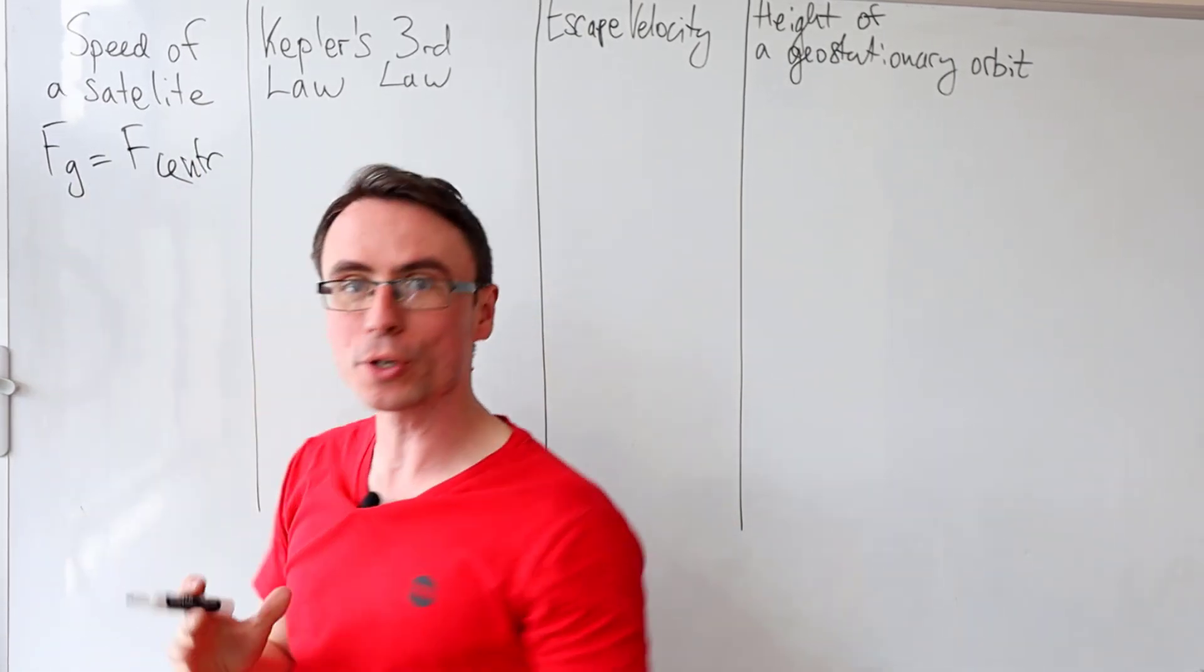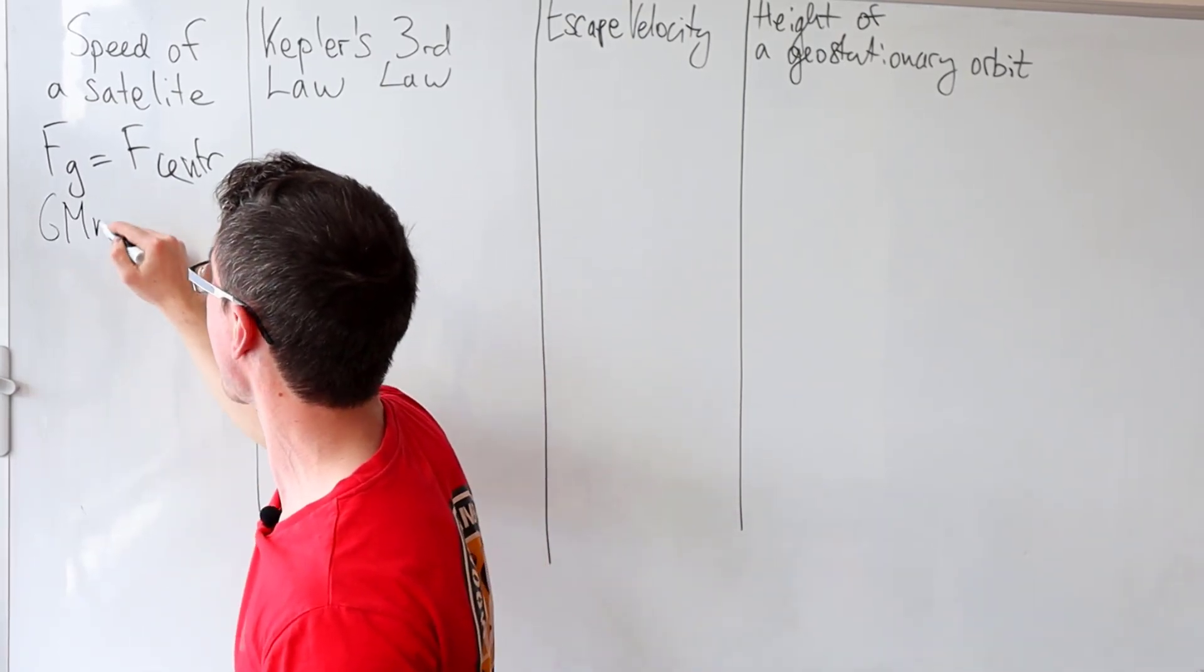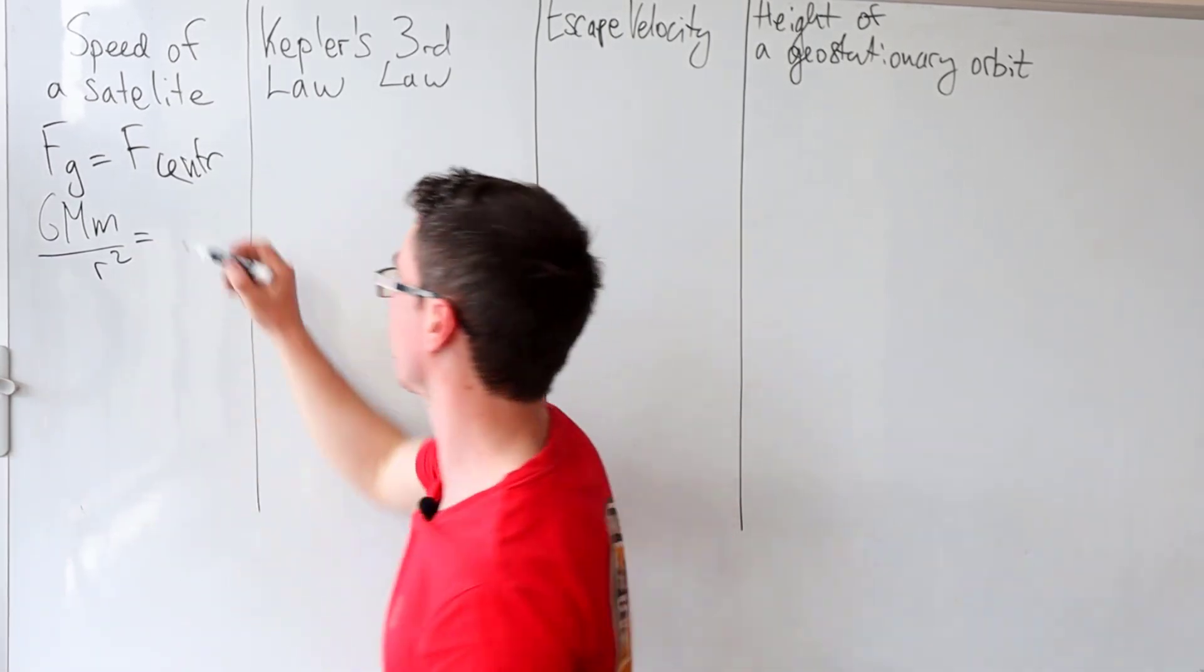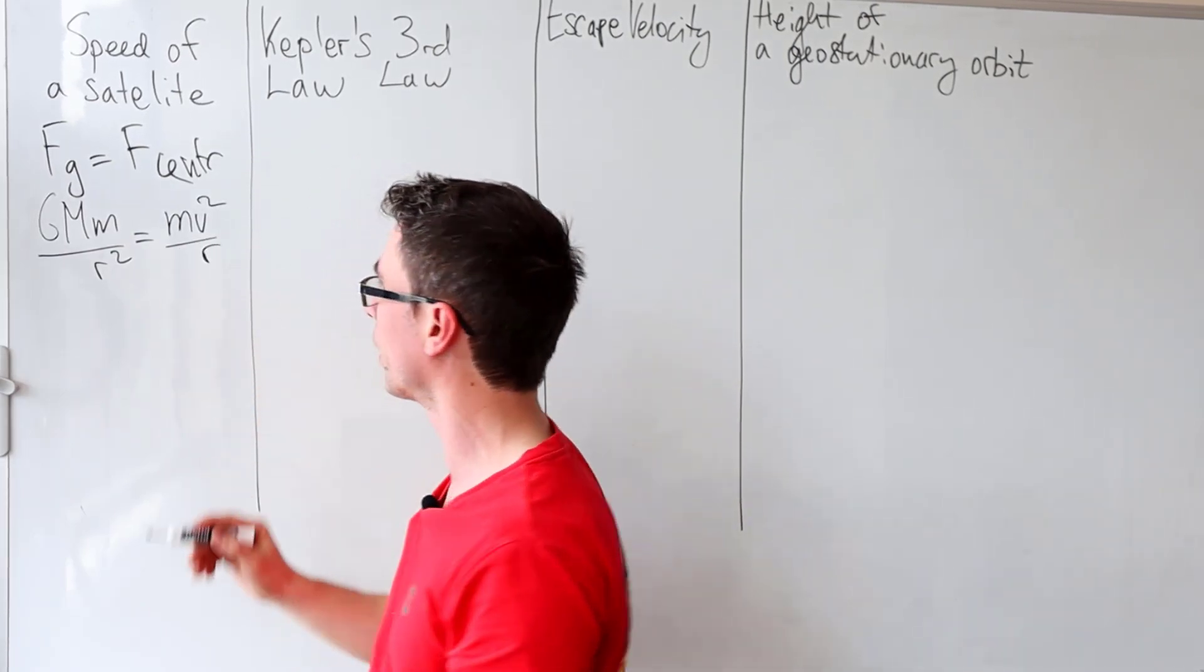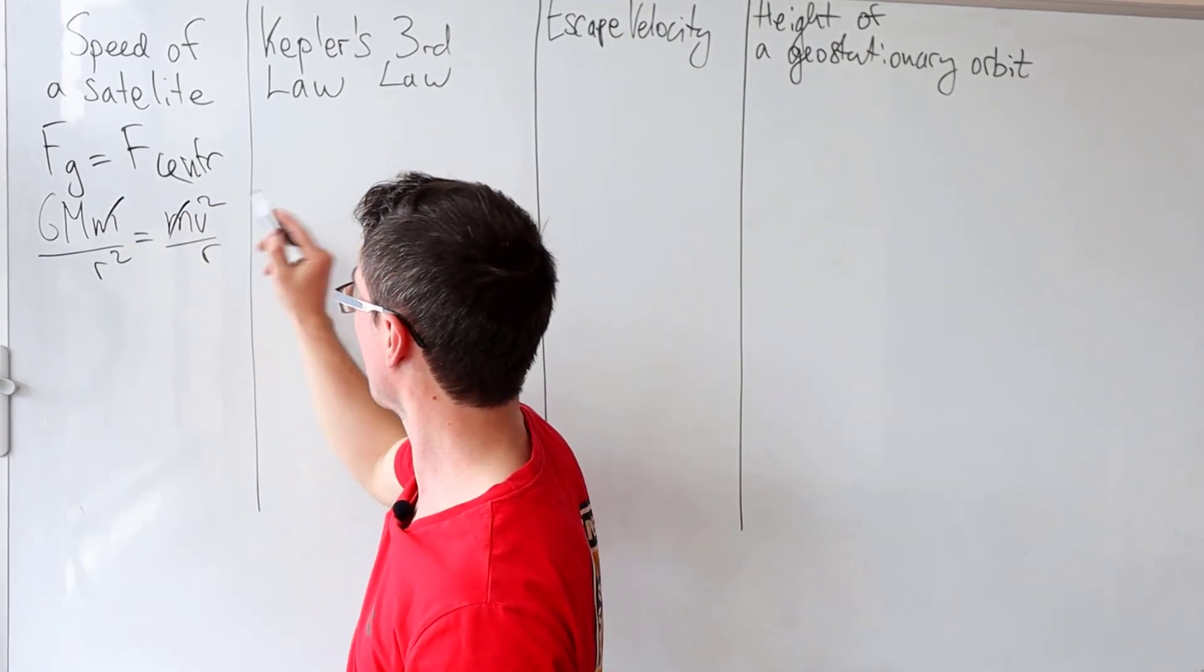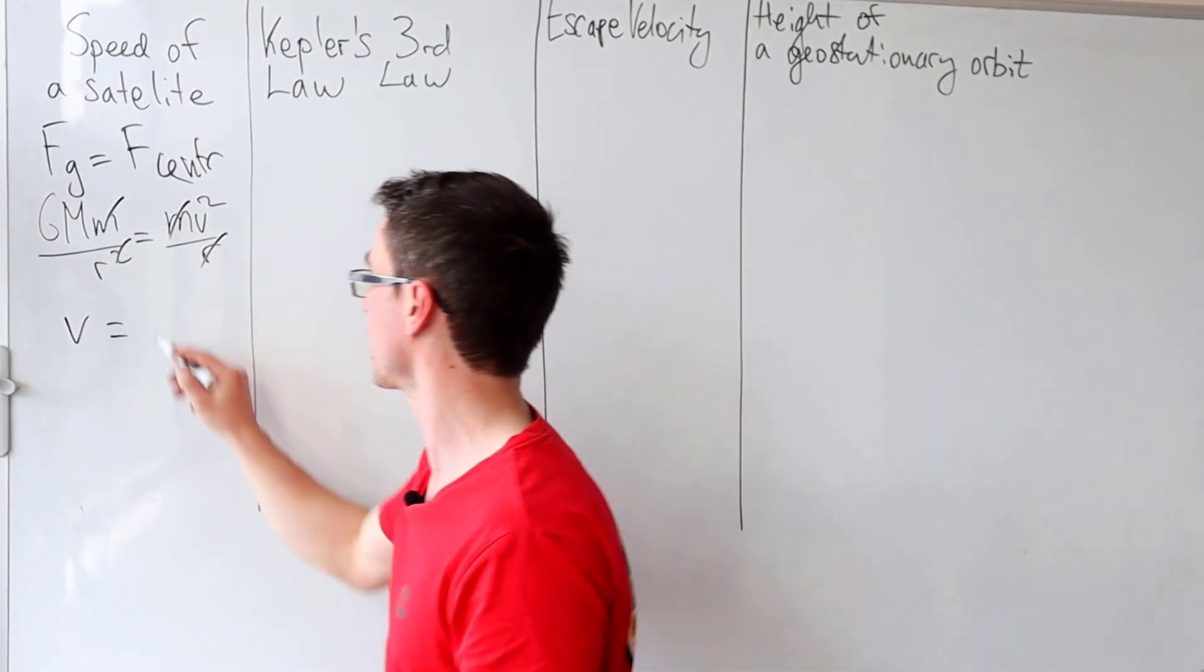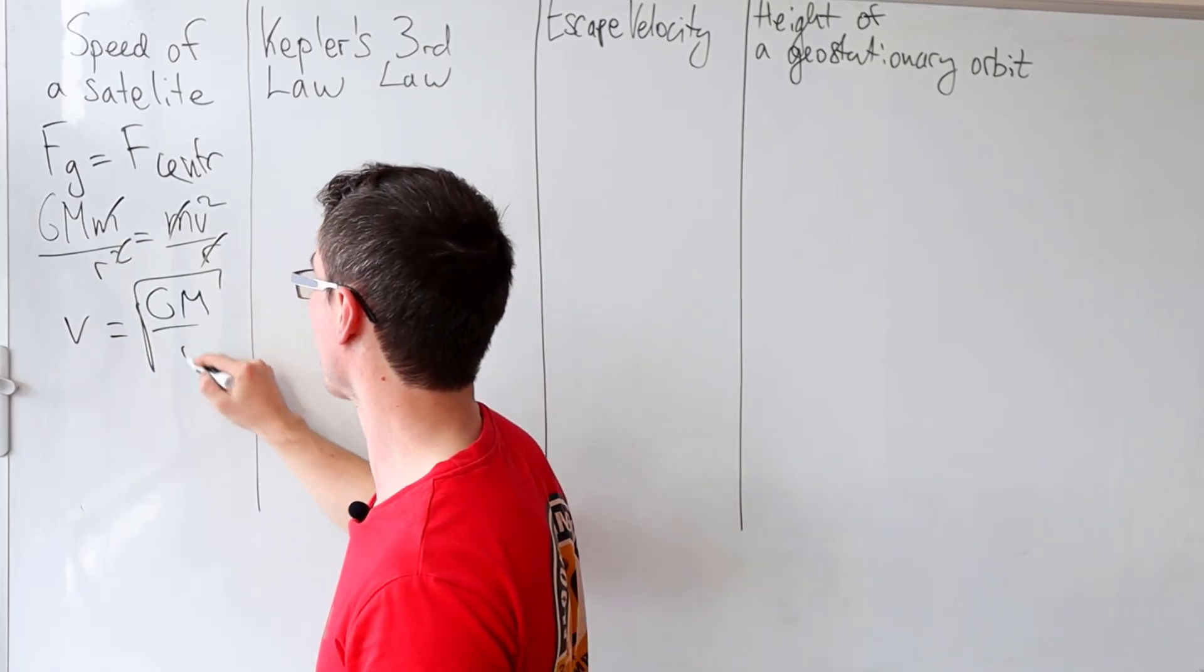The gravitational force or its magnitude can be given by GMm/r² and that will be equal to the resultant centripetal force which will just be equal to mv²/r. Let's do a little bit of cancellations. The mass can go, the radius can go and what we're left with is that the speed of a satellite is just given by the square root of GM/r.